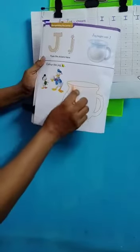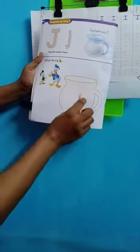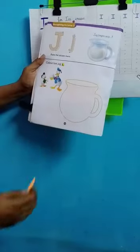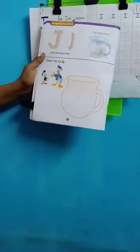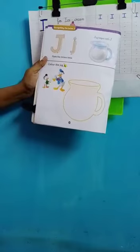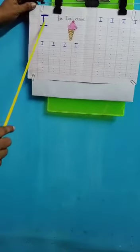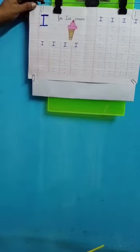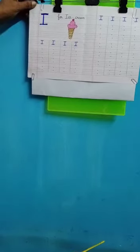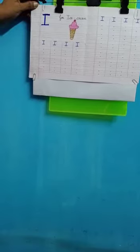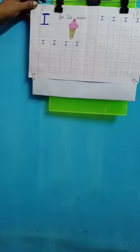Okay, after you color I and J, from the sticker page you take out the stickers of I and J and put the sticker there. Okay, now for your homework, your mummies and daddies will set this for you in your exercise book. You will write it.